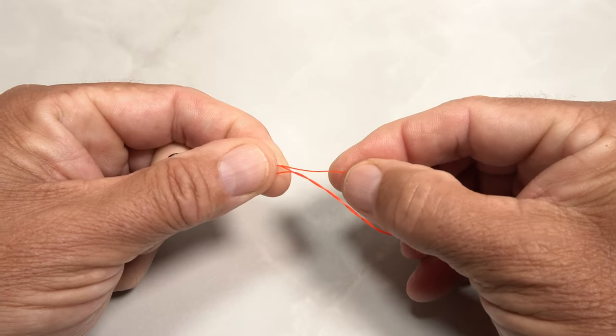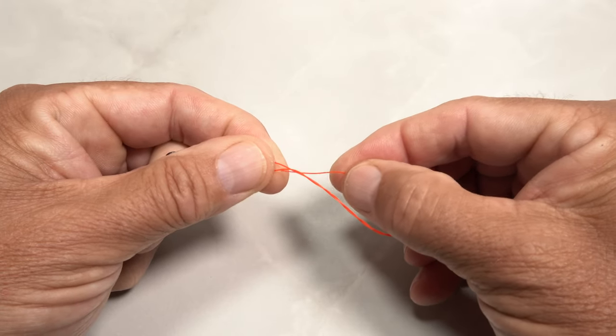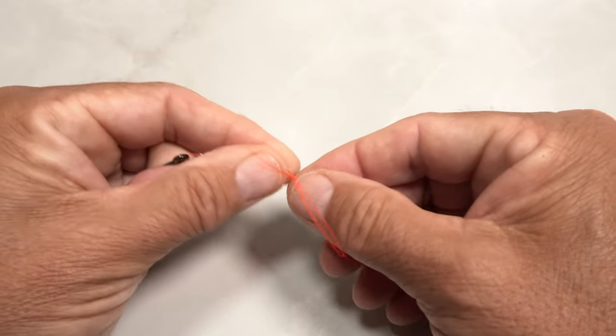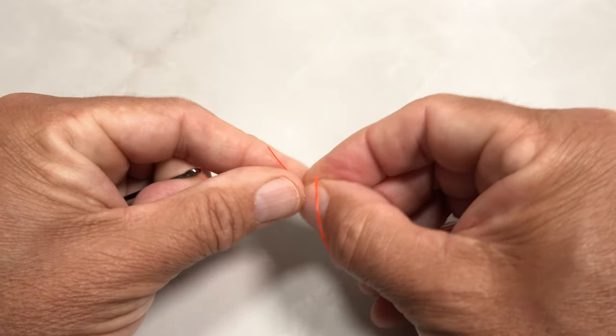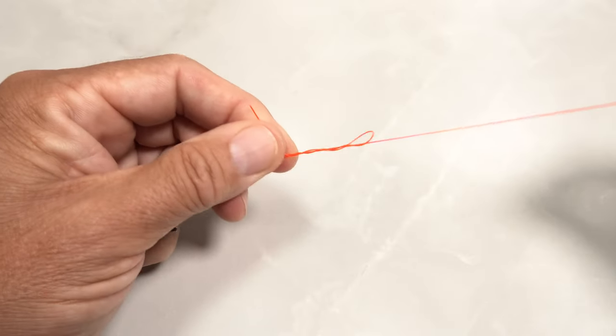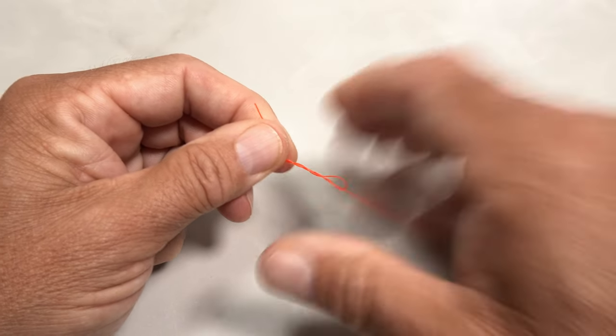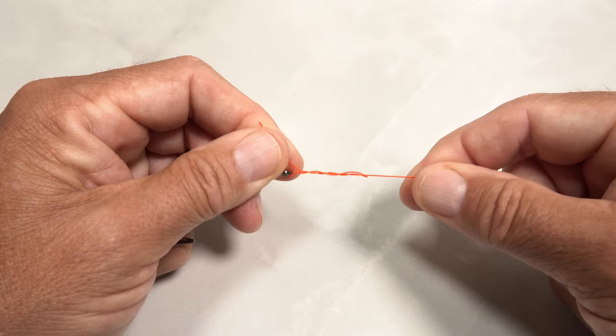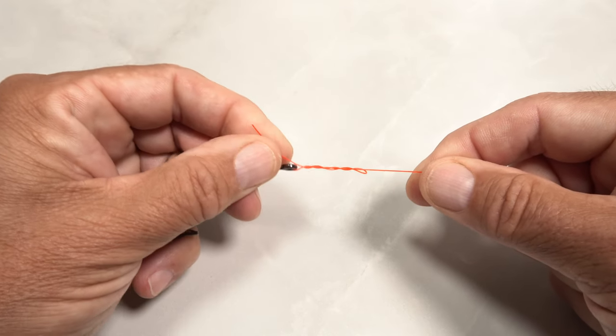Thread the tag end through the hole held open by the thumb and index finger of your left hand, then pinch the tag between those fingers. To begin seating the knot, don't pull on the tag end. Instead, gently pull on the standing line so the knot begins to collapse on itself, like so.